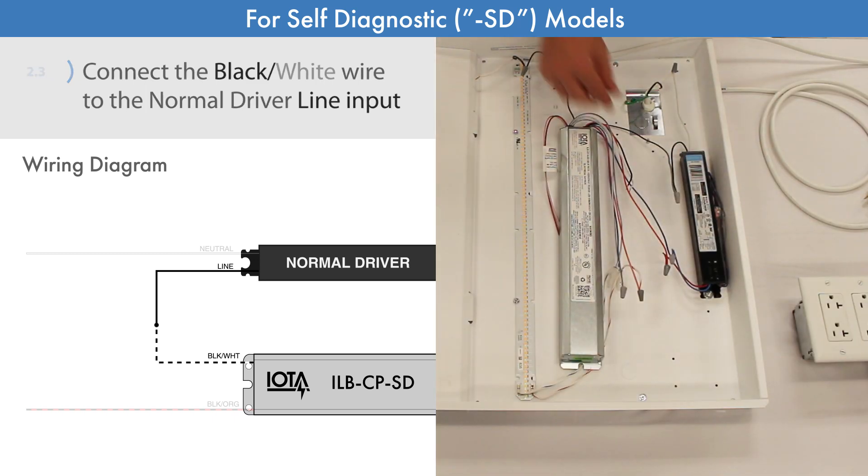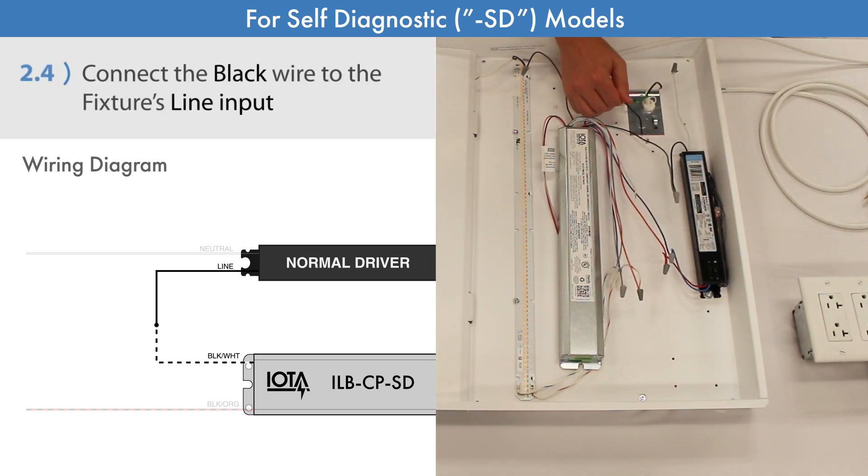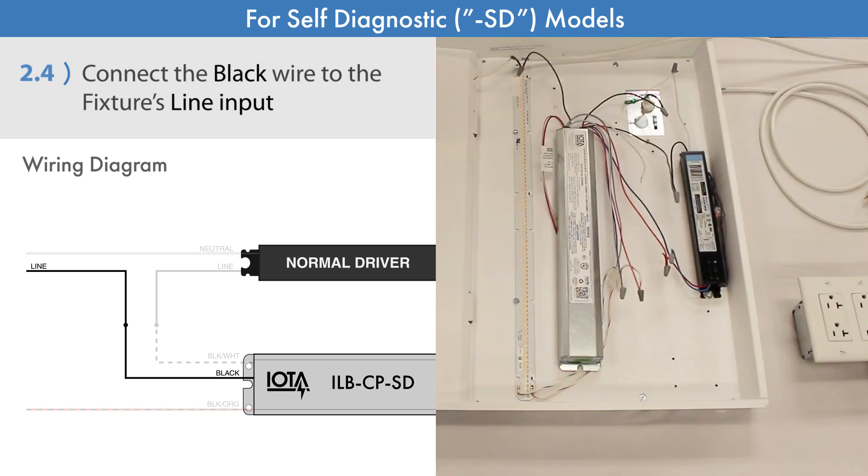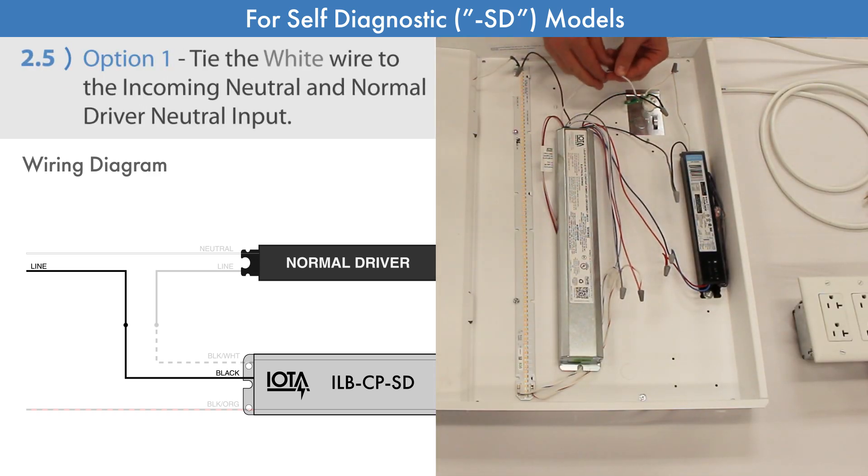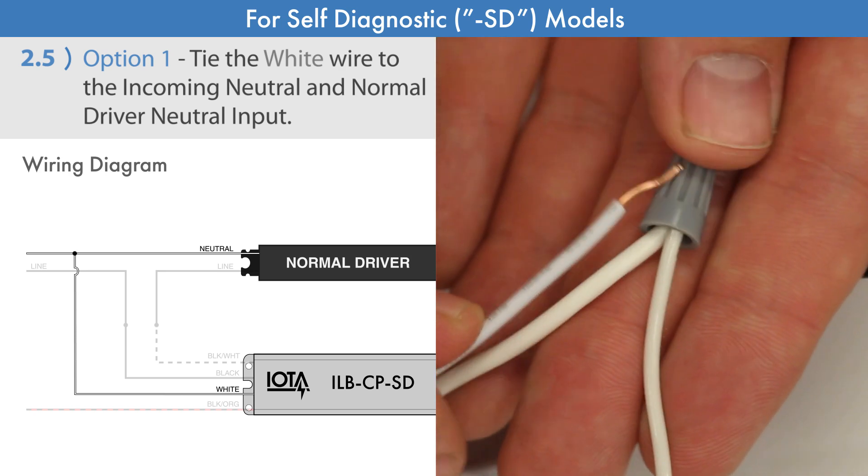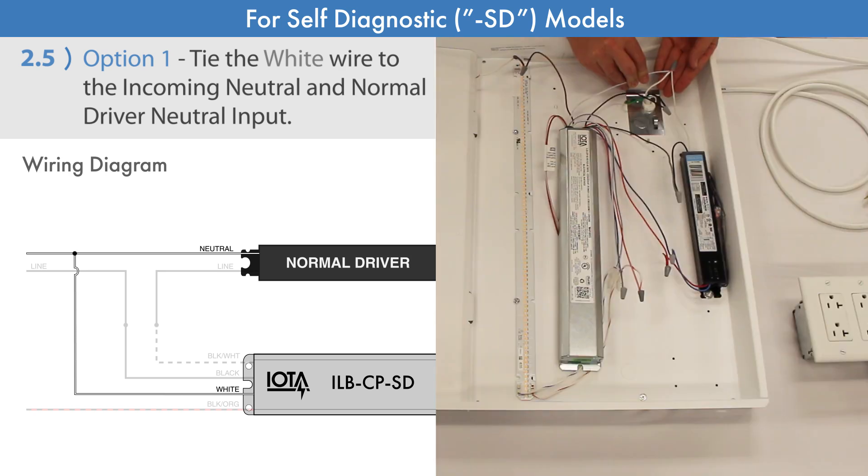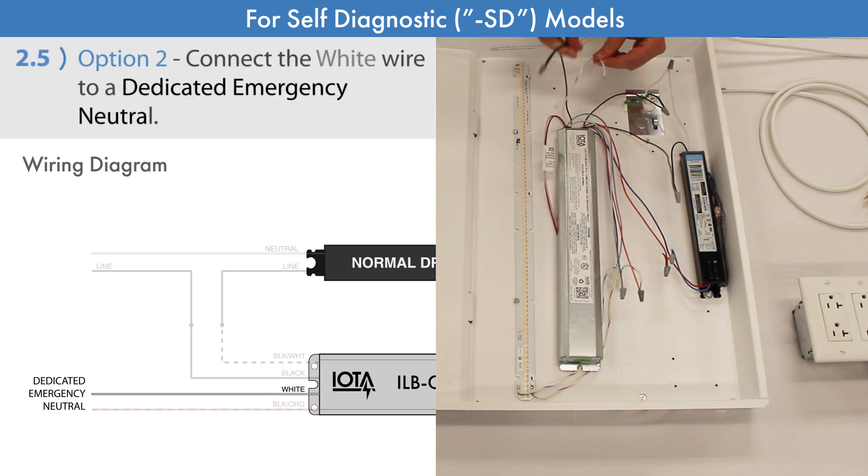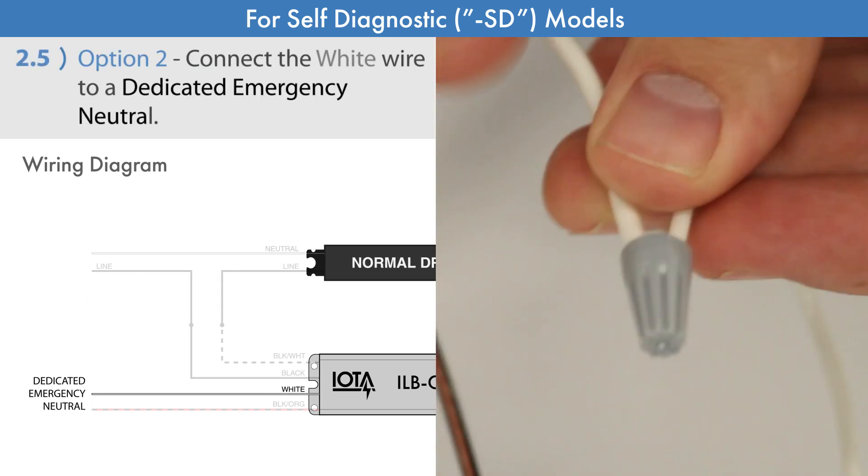The next step is to connect the black wire from the ILB-CP to the fixture's line input. And lastly, you may either tie the white wire together with the fixture's incoming neutral and the normal driver's neutral input, or if you have a dedicated emergency panel, you may connect the white wire to its neutral output.